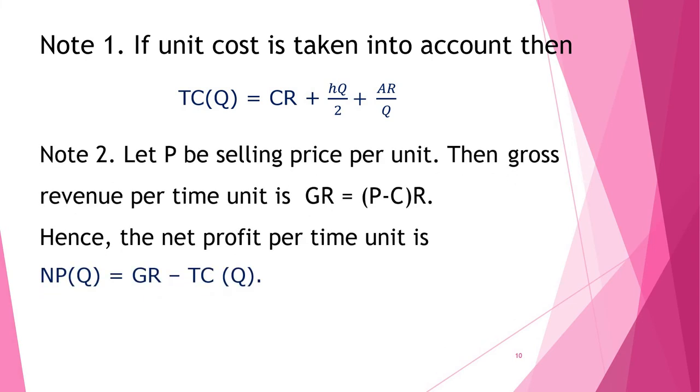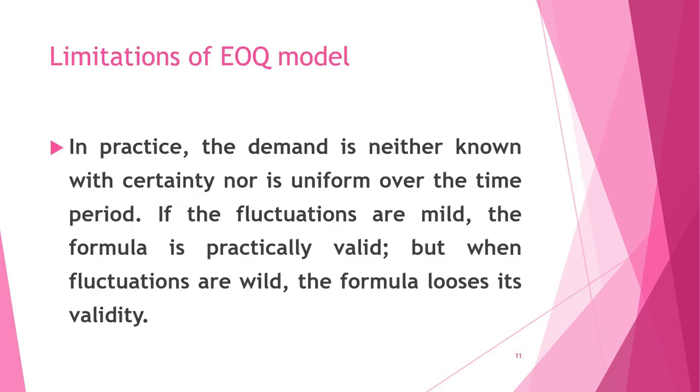Second note: if P is selling price per unit, then gross revenue is the difference of selling price and cost price multiplied by demand. So net profit is the difference of gross revenue and total cost. Now you can see that gross revenue is also independent of Q. So Q₀, which was obtained earlier as √(2AR/H), will not affect even in computing net profit, or I can say that profit maximization is equivalent to cost minimization, where Q₀ is given by √(2AR/H).